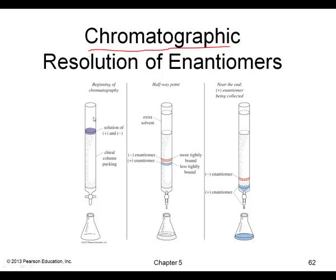You can also separate enantiomers using chromatography, where a chiral packing column allows one enantiomer to be separated from the other.